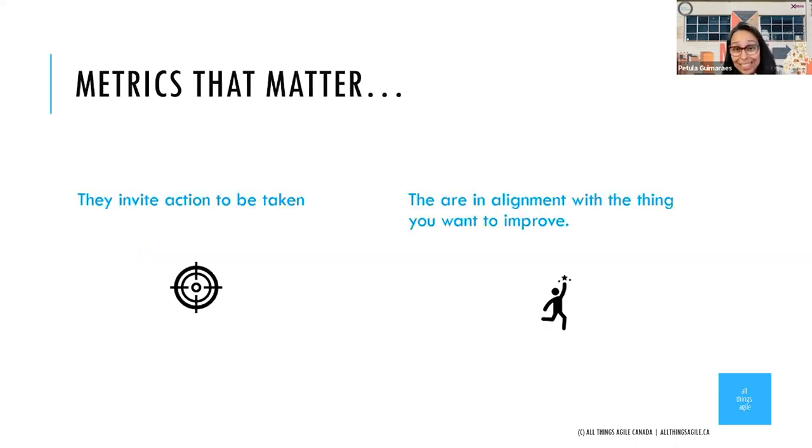What makes the metrics that really matter are these two things: they will invite you to take some sort of action—do more of this, do less of that. It's really that simple. The measures that you collect to help answer that metric are in alignment with that thing that you want to improve. That is really important because just finding something because it's easy to measure doesn't mean that we are on the right track.